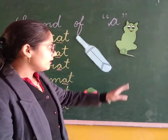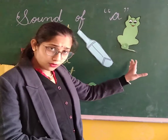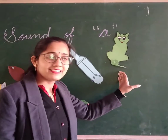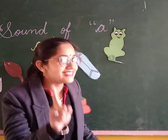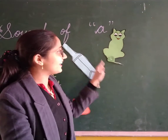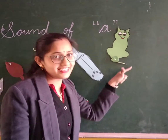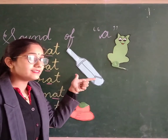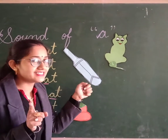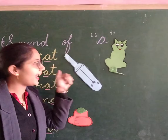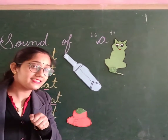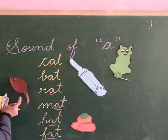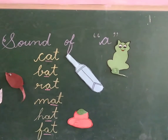Okay kids, do you know what is this? What is this? Yes, this is a cat. What is this? Yes, this is a pet. Hat, rat, mat.